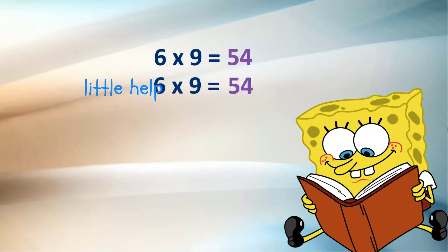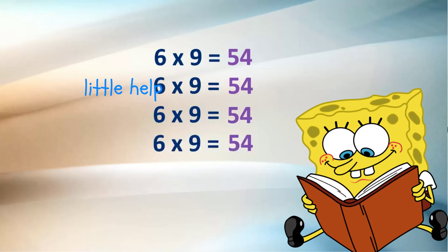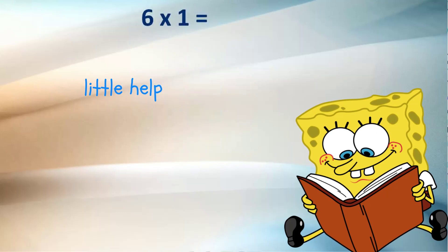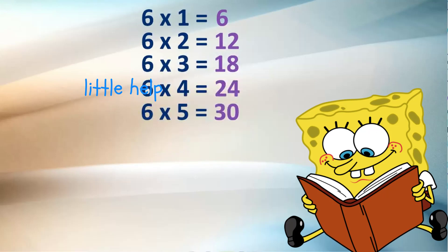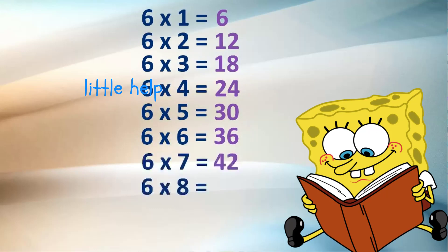6 nines are 54. 6 nines are 54. 6 nines are 54. 6 ones are 6, 6 twos are 12, 6 threes are 18, 6 fours are 24, 6 fives are 30, 6 sixes are 36, 6 sevens are 42, 6 eights are 48, 6 nines are 54.